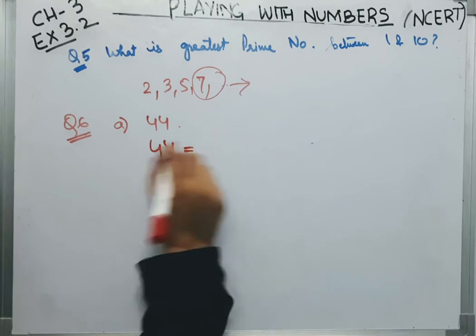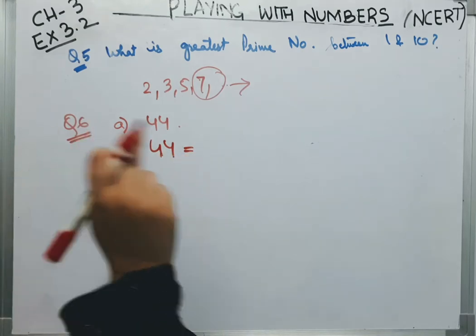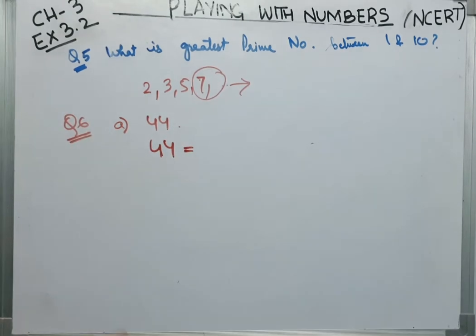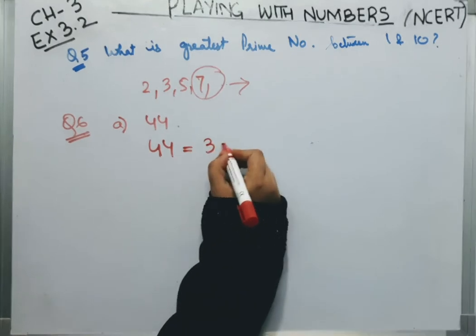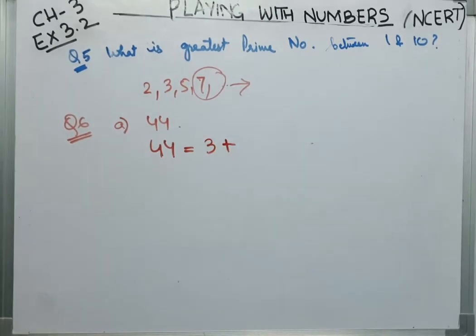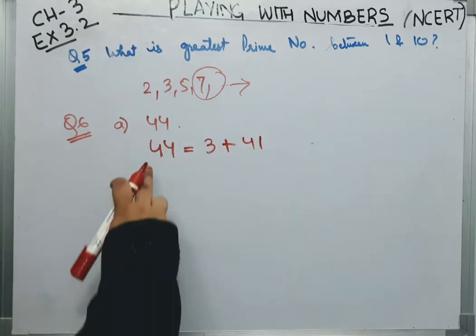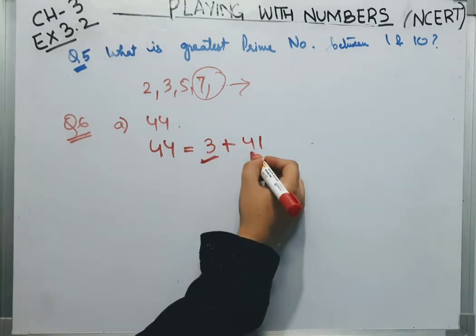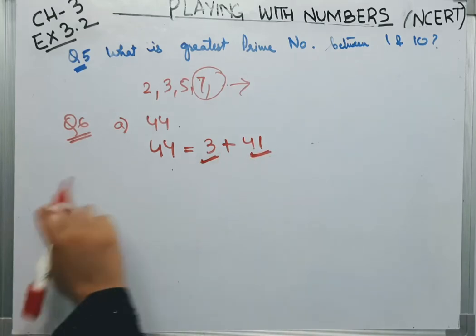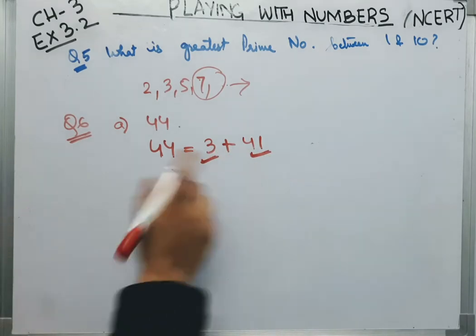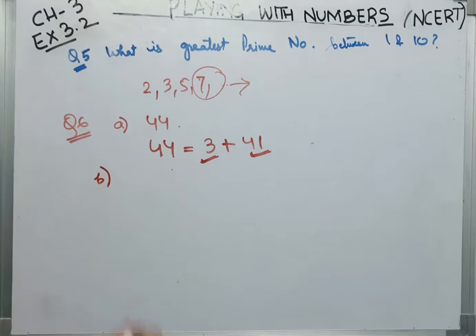Hame, odd prime numbers 2 is not an odd prime number. It's a prime number but it's an even number. So, we will take 3. 3 me hume kitna add karte hai? So that we get 44. On adding 41, we get 44. So, these 2 are odd numbers and they are prime numbers. So, 44 can be written as 3 plus 41.